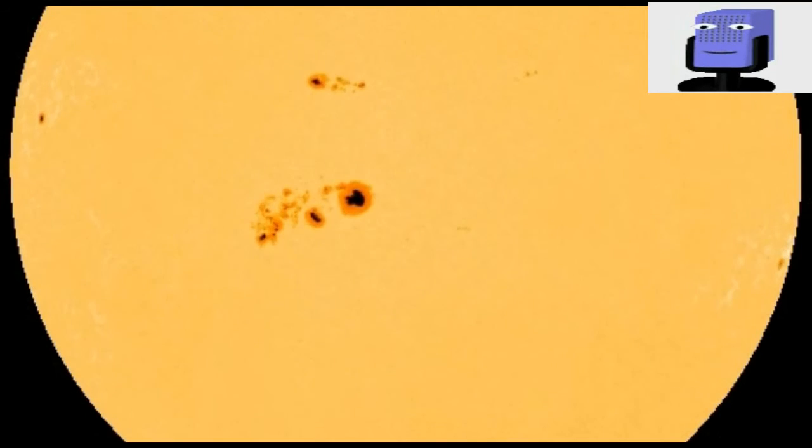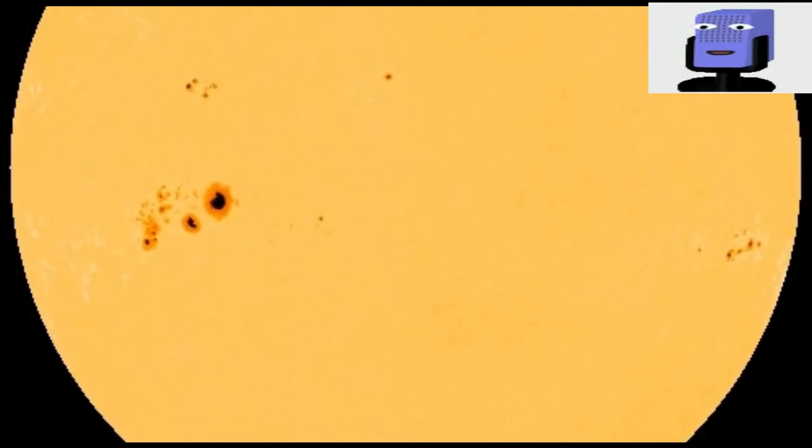The sprawling sunspot contains dozens of dark cores, the largest big enough to swallow Earth three times over. This makes it an easy target for amateur solar telescopes.